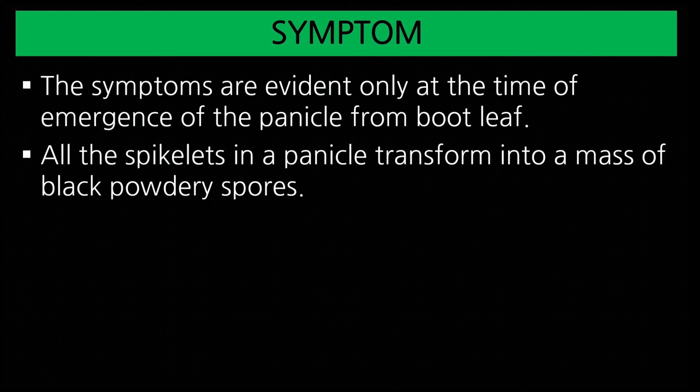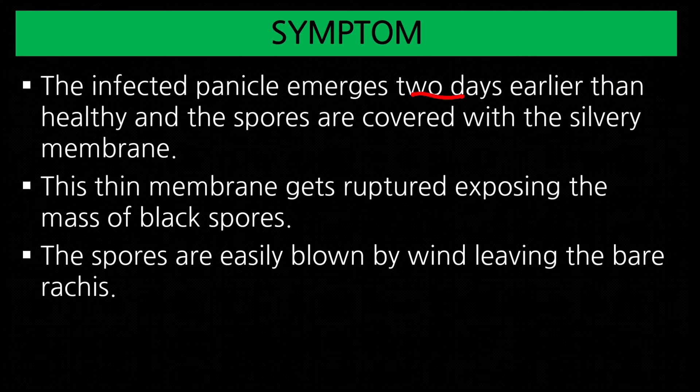Loose smut of wheat: The grain transforms into a mass of black powdery spores. The infected pinnacle emerges two days earlier than healthy ones, and spores are covered with a silvery membrane. This thin membrane ruptures, exposing the mass of black spores, which are easily blown by wind, leaving bare rachis.